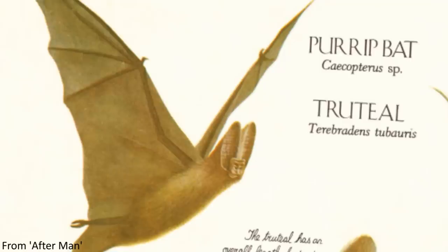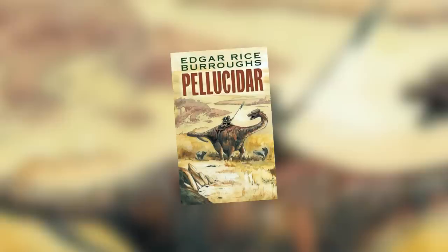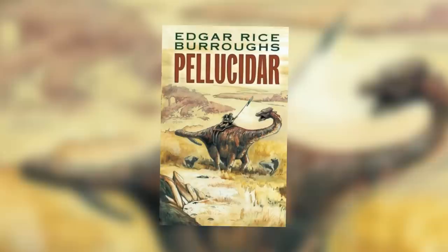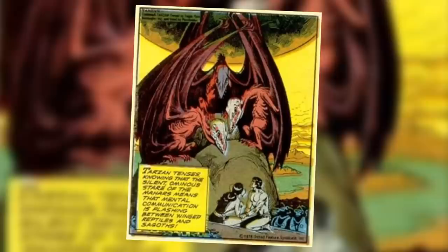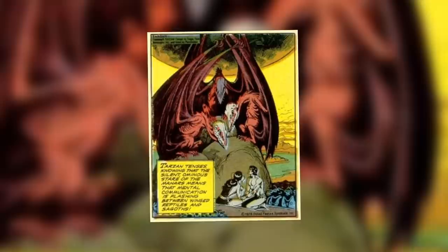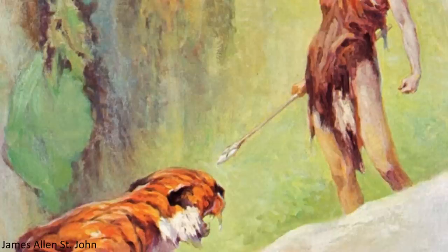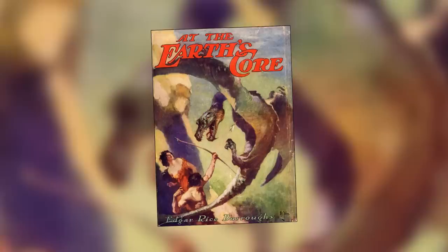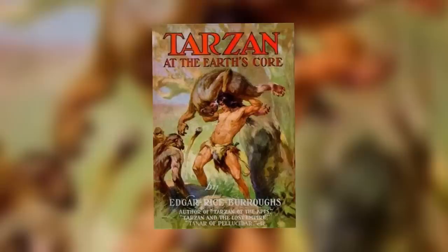But before we get into Dixon's works, there are actually a few other projects that, while not specifically influences on After Man, nevertheless can still be classified as speculative zoology and are therefore deserving of mention. The first of these is the fictional world known as Pellucidar, featured in a series of books written by author Edgar Rice Burroughs, the creator of Tarzan. Pellucidar is a world inside our own Earth, accessible through a polar tunnel, containing many species of prehistoric animals as well as speculative organisms, such as the Mahars — giant intelligent pterosaurs with telekinetic abilities — giant ants, and giant mammals known as ant bears that prey on them, along with various populations of primitive humans. The first entry was published in 1914 and the final entry in 1963, and there was even a crossover story in which Tarzan visited Pellucidar.